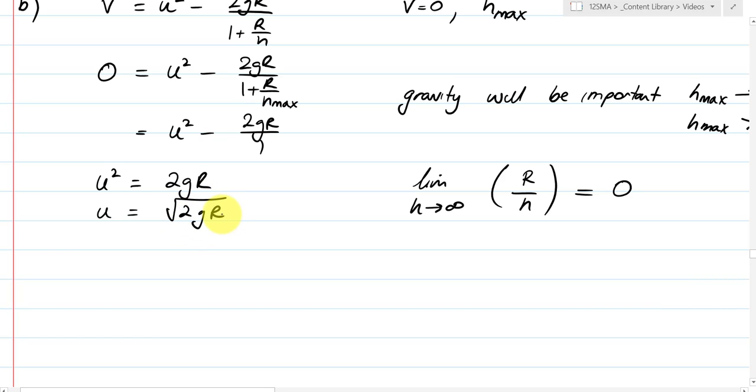So technically if the initial launch velocity is equal to the square root of 2gr meters per second, then this will have enough velocity and therefore momentum in the system to reach a height of infinity. And there are other assumptions involved in this. But we will escape the planet's gravitational pull. So there we have it. That's example six. A really nice contextual question.